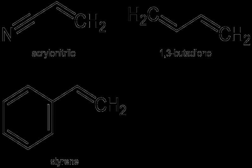ABS is derived from acrylonitrile, butadiene, and styrene. Acrylonitrile is a synthetic monomer produced from propylene and ammonia. Butadiene is a petroleum hydrocarbon obtained from the C4 fraction of steam cracking. Styrene monomer is made by dehydrogenation of ethyl benzene — a hydrocarbon obtained in the reaction of ethylene and benzene. ABS combines the strength and rigidity of acrylonitrile and styrene polymers with the toughness of polybutadiene rubber.